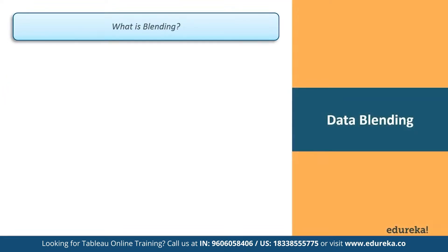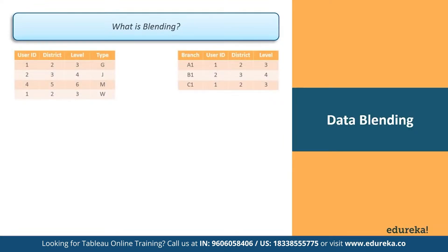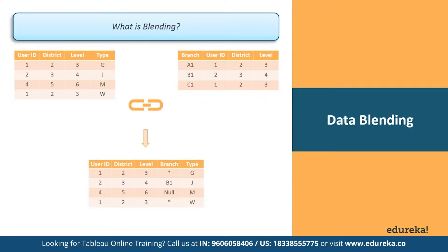Now how is it different from data blending? When you use data blending to combine data, a query is sent to the database for each data source you're using. The results of these queries, including the aggregated data, are sent back to and combined by Tableau. Taking the same tables with user ID as the linking field, blending takes all the data from the left table and supplements it with the data from the right table. The view uses all the rows from the primary data source and the aggregated rows from the secondary data source, based on the dimension of the linking fields.